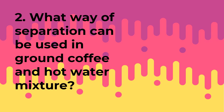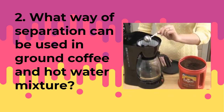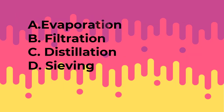Number 2. What way of separation can be used in ground coffee and hot water mixture? A. Evaporation. B. Filtration. C. Distillation. D. Sieving.